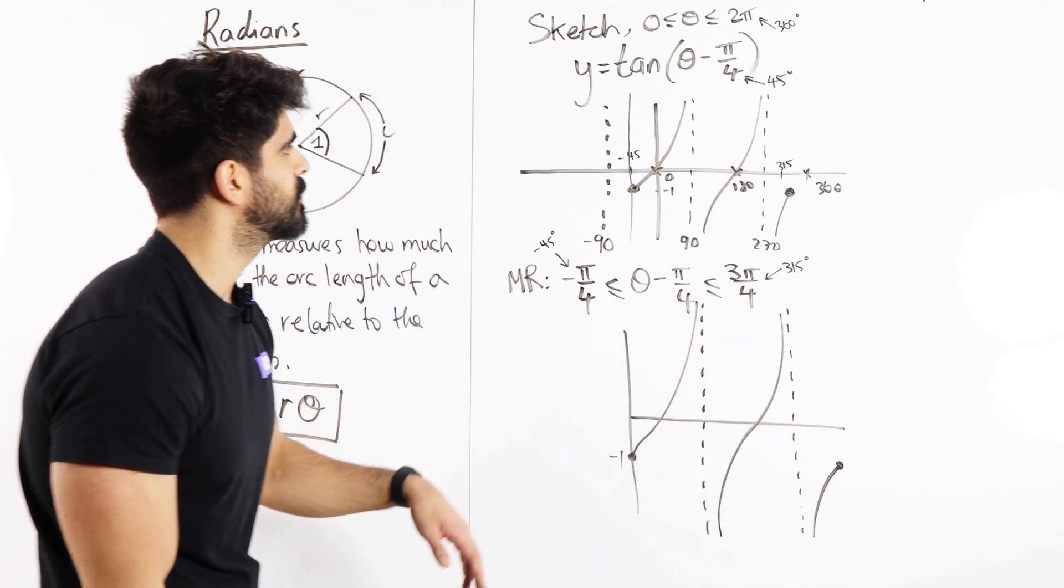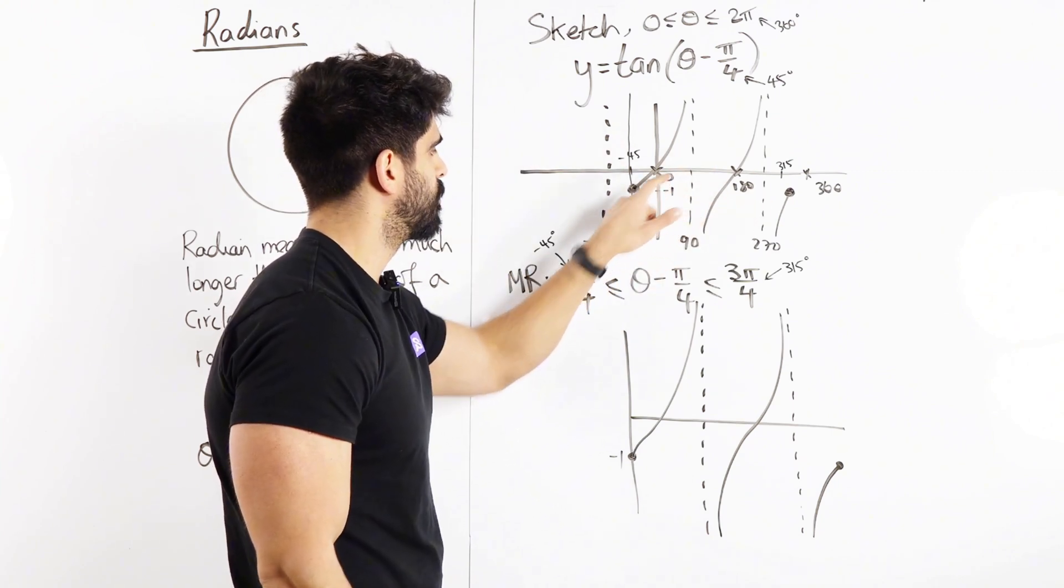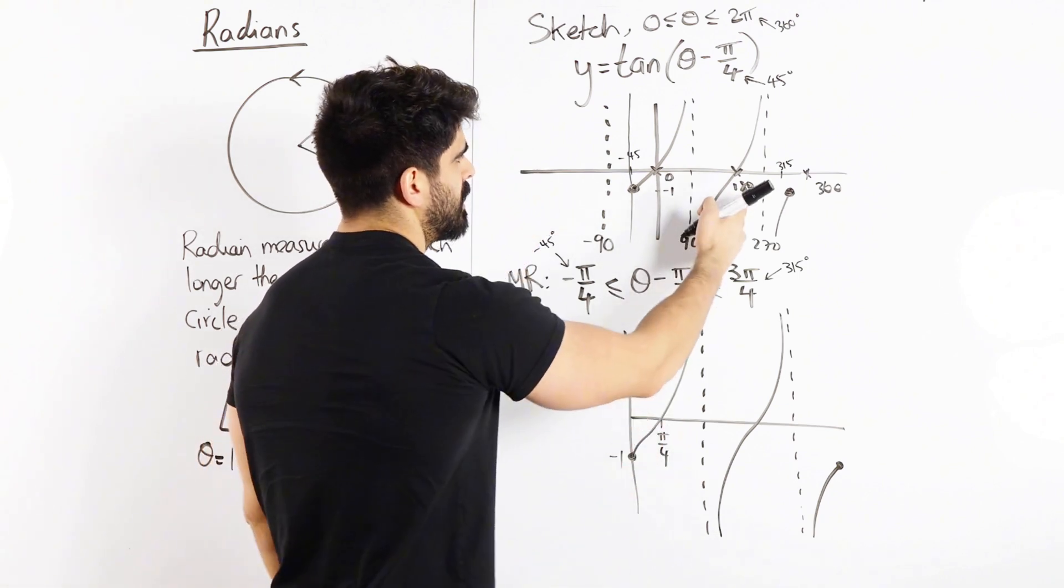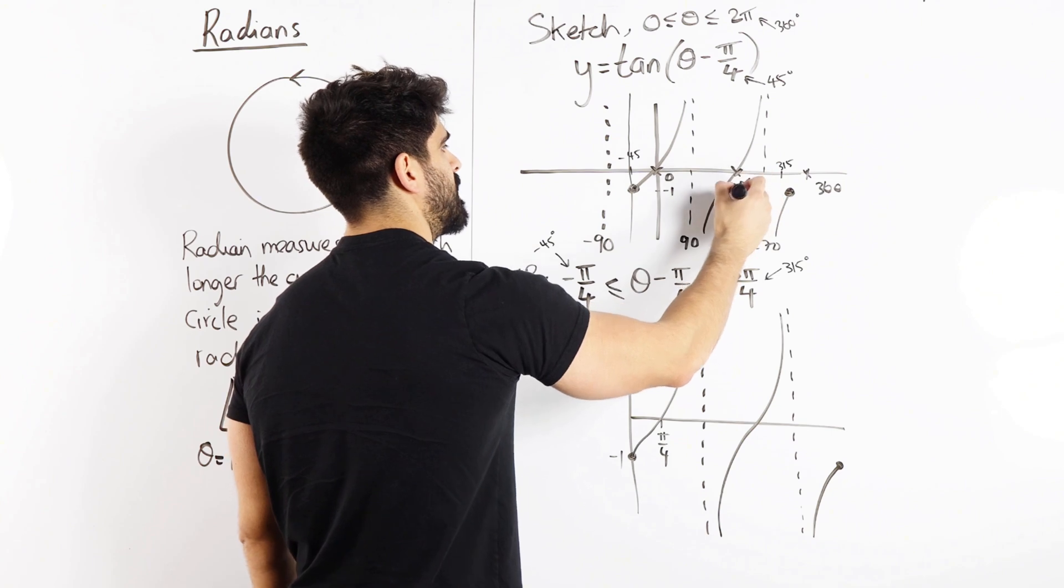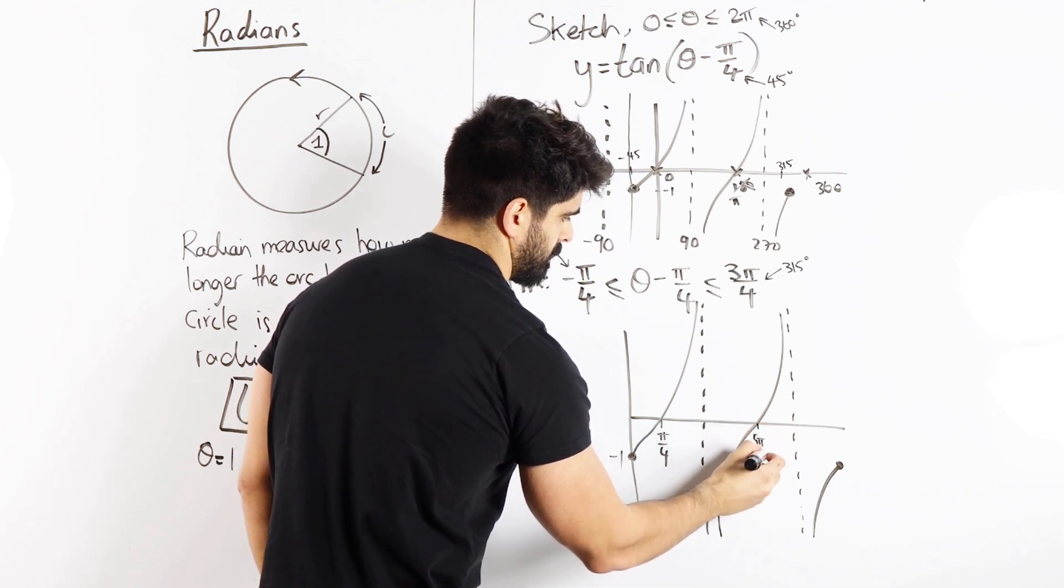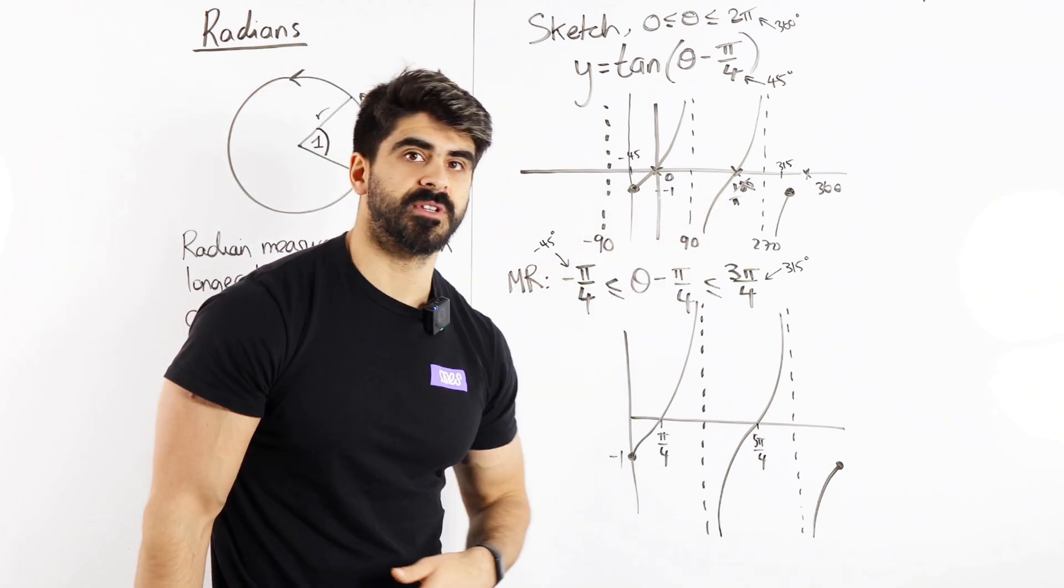So at zero, remember we're adding pi over 4. So at zero when you add pi over 4, this is just pi over 4. This one was at 180. Remember, 180 is pi, so when we add pi over 4, we get 5 pi over 4.